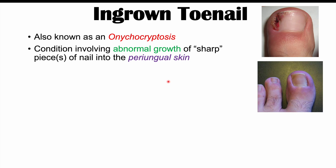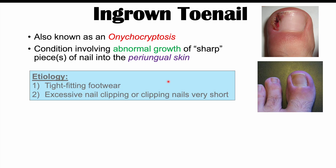There are two main etiologies as to why ingrown toenails occur. One is tight-fitting footwear — if a patient wears very tight-fitting footwear, that's a potential cause. The other is excessive nail clipping, or clipping nails very short. If patients clip their nails very frequently or cut them very short, that increases the risk of ingrown toenails.